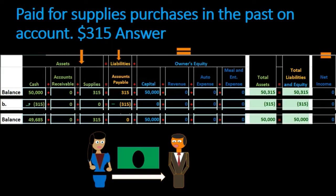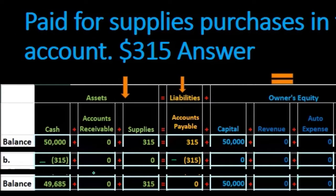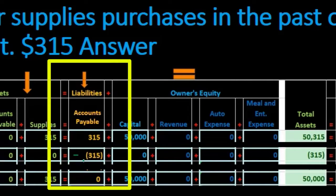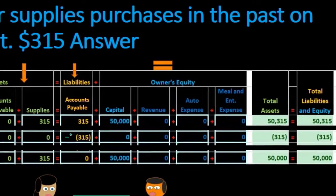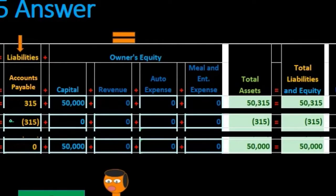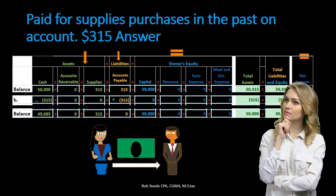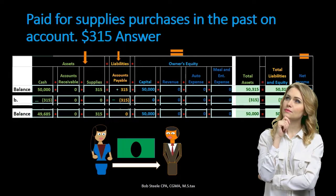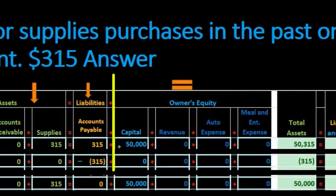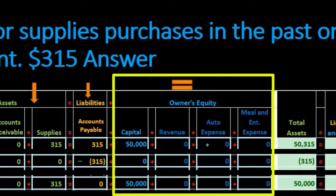Looking at the totals: cash of $50,000 minus $315 brings us to $49,685. Accounts receivable remains zero. Supplies remain at $315. Accounts payable was $315; subtracting $315 brings the balance down to zero. This is the typical pattern in accounts payable — we buy something on account, then pay it off. We may buy multiple things and pay in installments, but we can match purchases to payments through the history of the account. Capital remains $50,000.